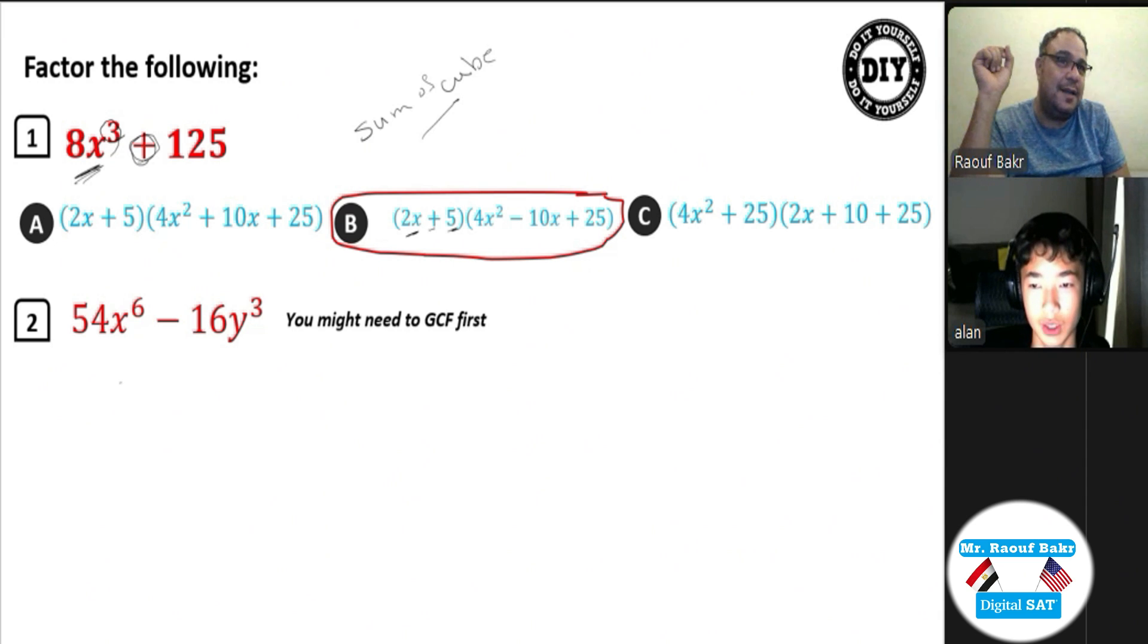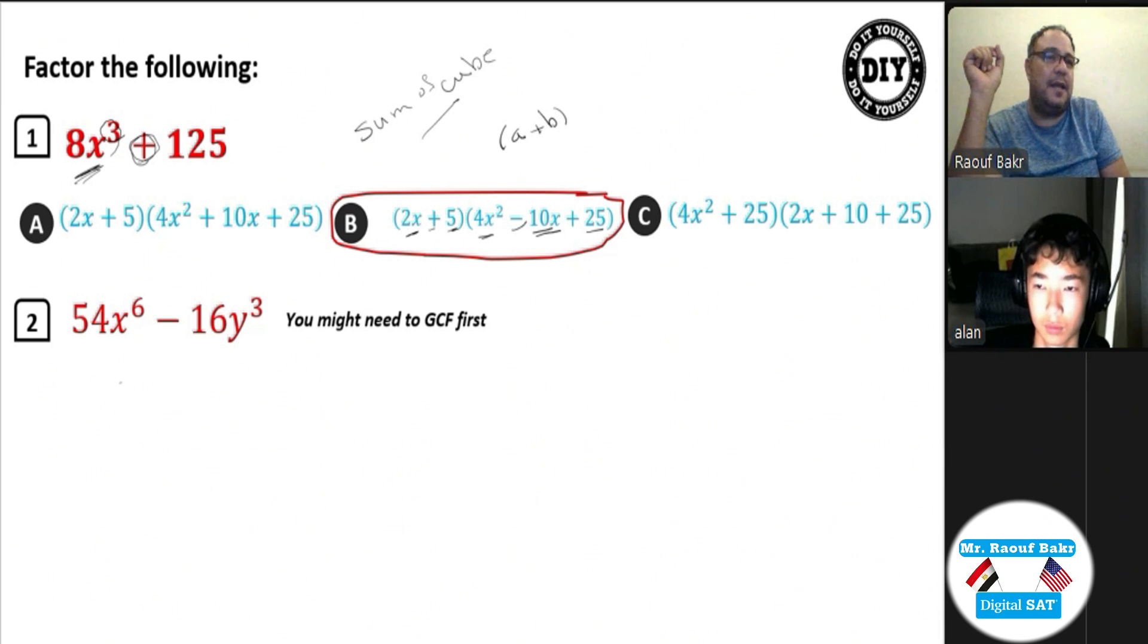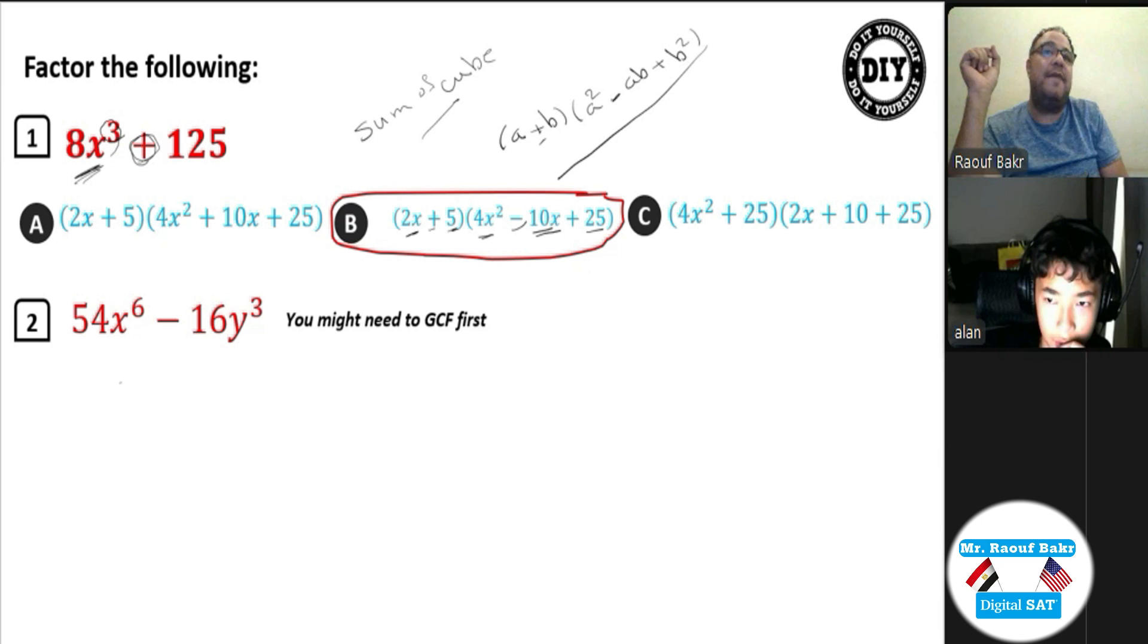So this is sum of cubes, so you have a plus b. Remember, then a squared... 2x is without cube. This is the formula: a plus b, then a squared. Whatever is here should be opposite to here—minus ab, minus ab, plus b squared. Yeah, so this is with sum of cubes.